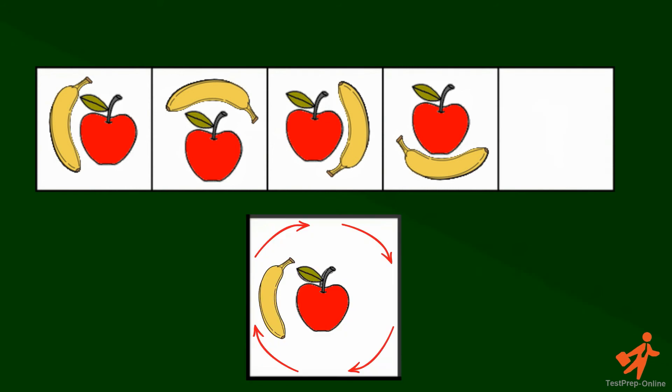If we continue the pattern with the banana moving around the apple, the banana needs to be to the left of the apple in the correct answer.